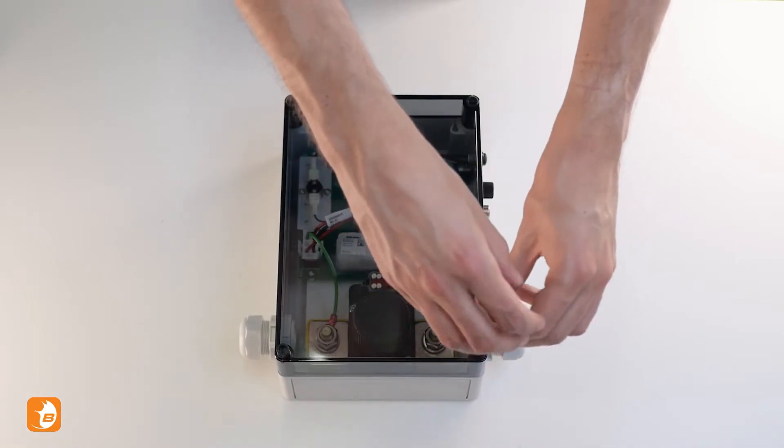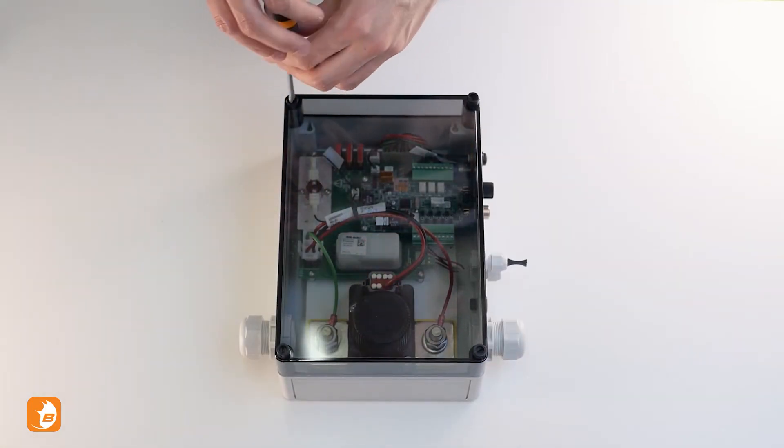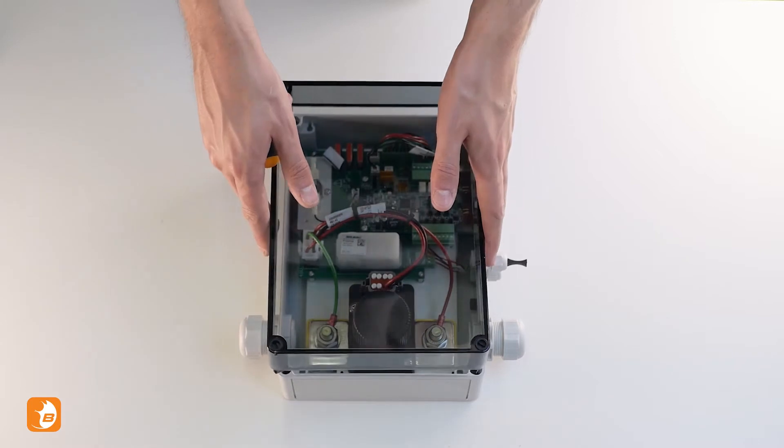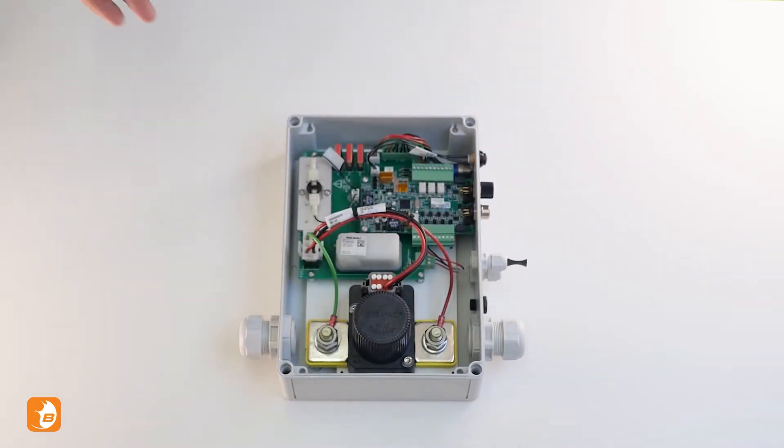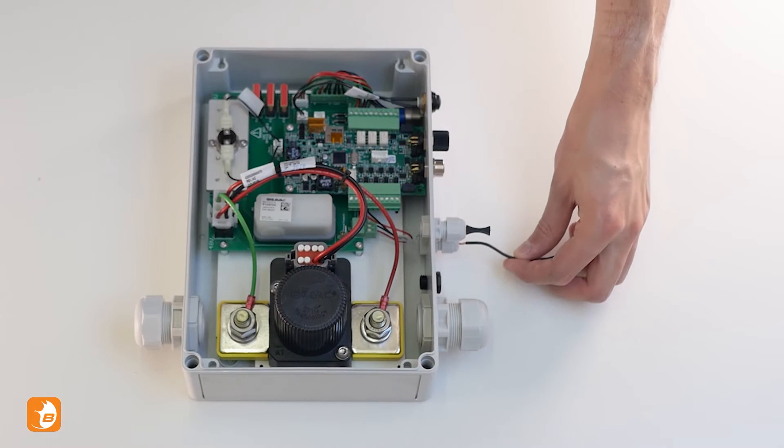Start by removing the top of the battery interface box. Now guide the minus sense cable through the BT minus cap.